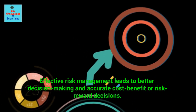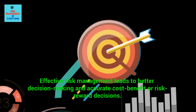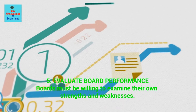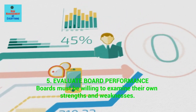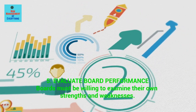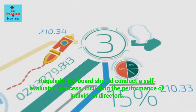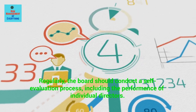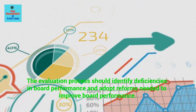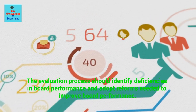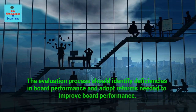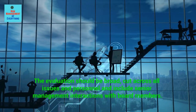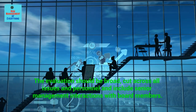Effective risk management leads to better decision making and accurate cost-benefit or risk-reward decisions. 5. Evaluate board performance — boards must be willing to examine their own strengths and weaknesses. Regularly, the board should conduct a self-evaluation process, including the performance of individual directors. The evaluation process should identify deficiencies in board performance and adopt reforms needed to improve it. The evaluation should be broad, cut across all issues and personnel, and include senior management interactions with board members.